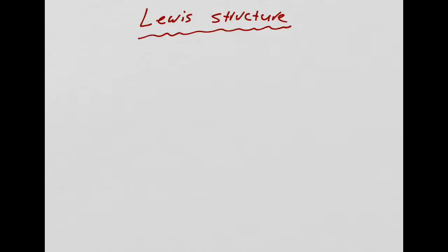Now let's go over Lewis structures. Lewis structures are for covalent compounds — that's two non-metals together, for example PCl3 — because there's no attraction of charges, so we're just talking about sharing electrons. I have these rules for Lewis structures; you follow the rules and you're going to be able to do any problem. Rule number one: find out the total number of valence electrons — calculate the total number of valence electrons.